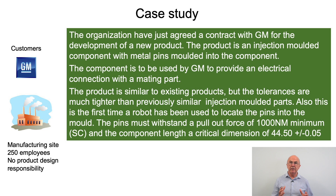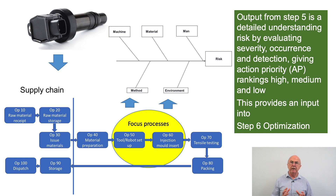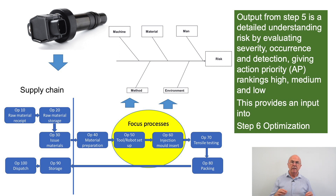To make this video series as practical as possible, we've been working within the context of a case study. This is a product for GM, used for electrical connection with a mated part. For the first time in our company, we're using a robot to transfer pins into a tool for injection moulding. This seven step methodology tends to go much deeper into the manufacturing process to identify risk, in particular really understanding the detailed 4M influence on the process.